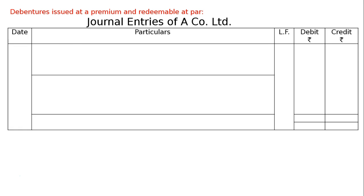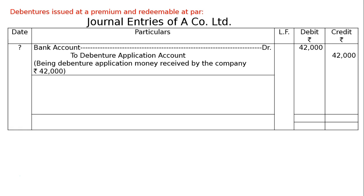First entry is Bank Account debited to Debenture Application Account — Rs. 42,000 in both the debit and credit columns. The narration is: being debenture application money received by the company. Rs. 42,000 means Rs. 40,000 worth debentures face value, issued at a premium of 5% and redeemable at par.